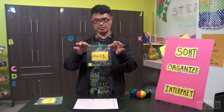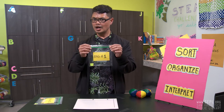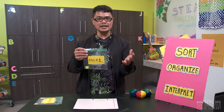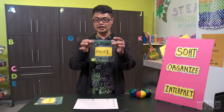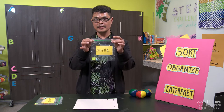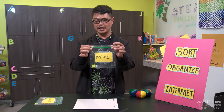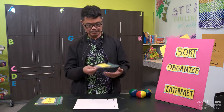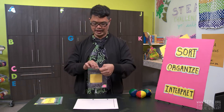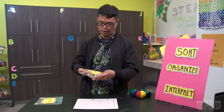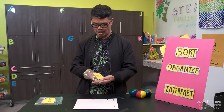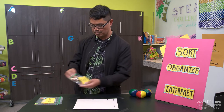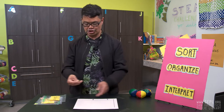Bag number one. At home, look for colorful beans or colorful cereals and put them in a bag — that will be your data. Now we're going to follow these steps. Step one: we need to organize our data in the form of shapes.